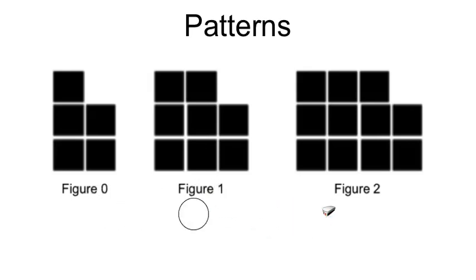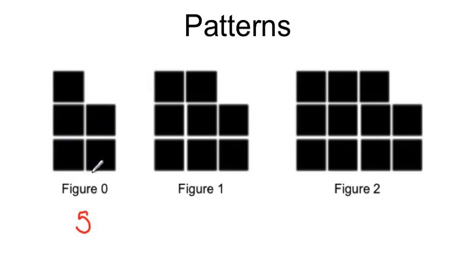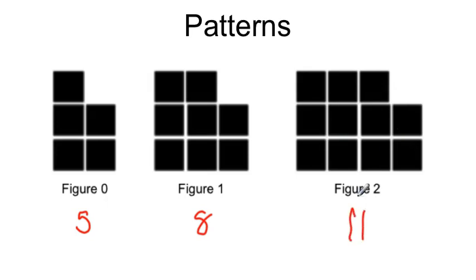The second number we're going to look at is how many blocks there are. So in figure zero there are five blocks. Be very systematic about the way you count these — I started all the way at the top left, counted down, then moved over and started from the top and counted down again. It's easy to get lost, especially as we get into bigger figures, if you don't do that. Figure one has eight blocks, and in figure two we have eleven blocks. You may have noticed from our pattern that what's happening is we're adding three blocks each time.